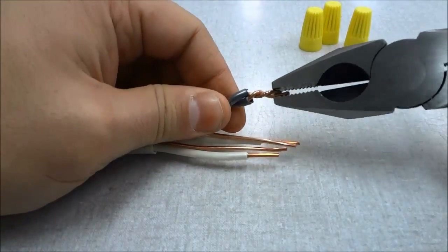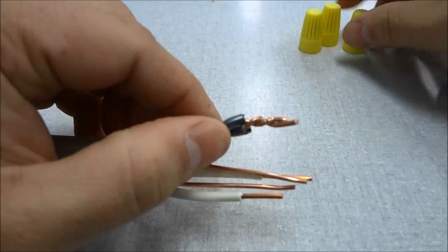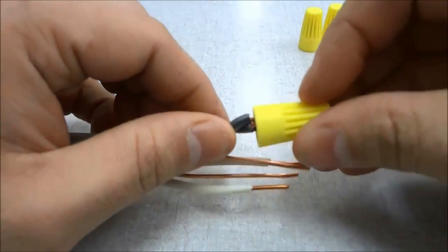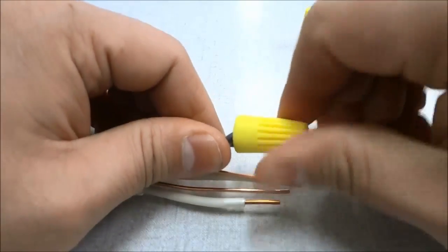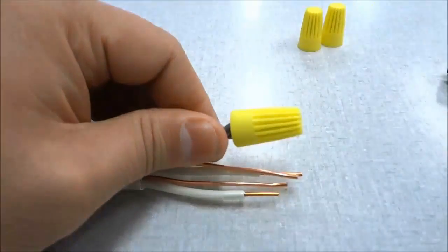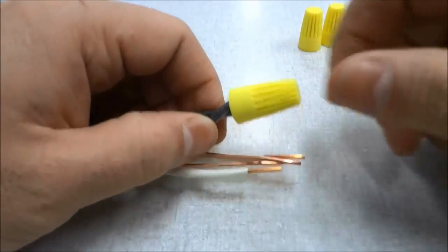Once you see that they are twisted together, I will just bring it a little bit closer to the camera. Then you can take a wire connector like this and place it over top of them and twist the wire connector clockwise. Once the wire connector is on there fully, you are finished with that.